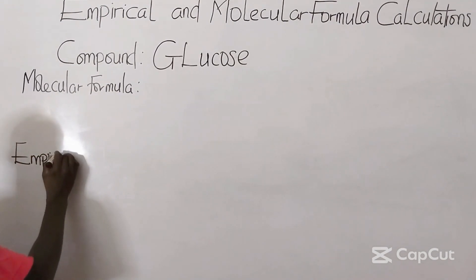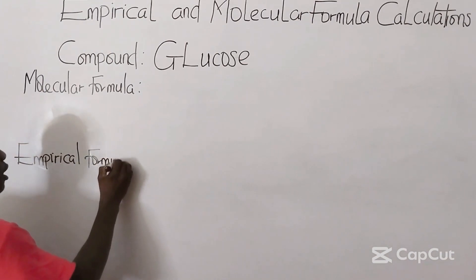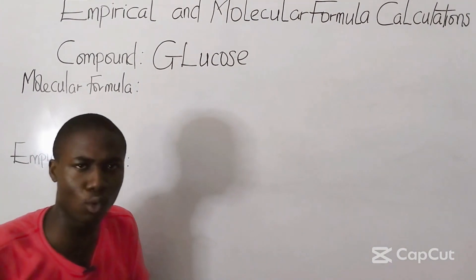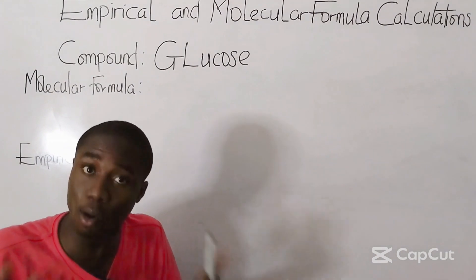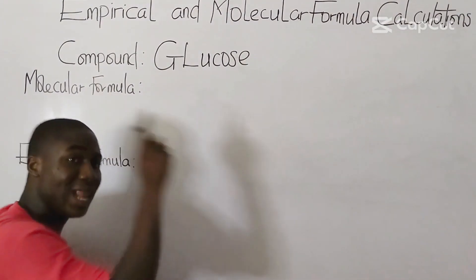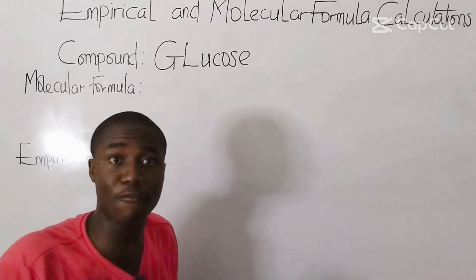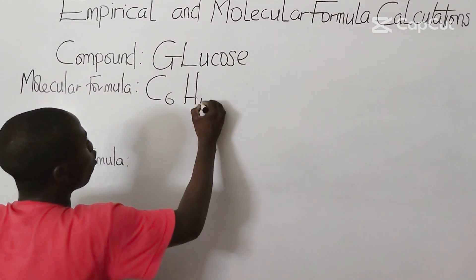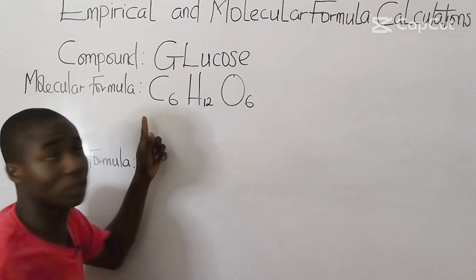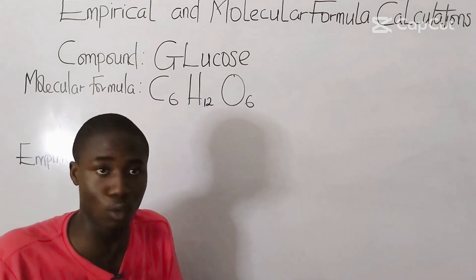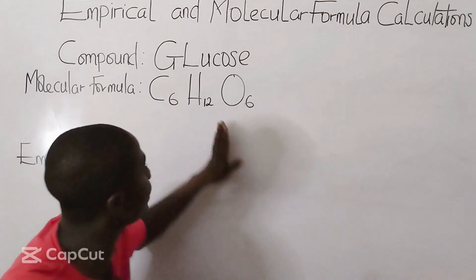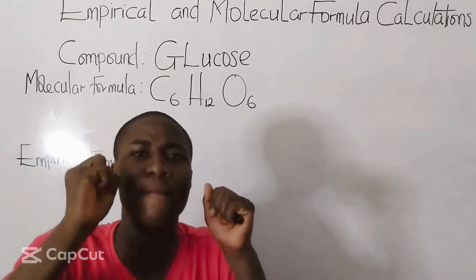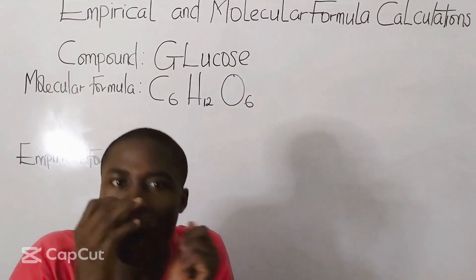Let's start with the molecular formula. The molecular formula of glucose is C6H12O6. This is the molecular formula — or the chemical formula — of glucose. This must be noted: the molecular formula of a compound is the actual way that compound exists.